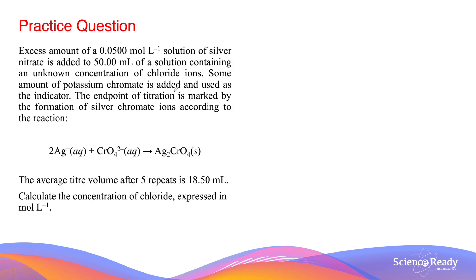Let's reinforce the concepts in Mohr's method by looking at a calculation example. An excess amount of 0.05 mol per litre solution of silver nitrate is added to 50 millilitres of a solution containing chloride ions. Some amount of potassium chromate is added and used as indicator, and the endpoint of titration is marked by the formation of silver chromate. The average titer volume after 5 repeats is 18.5 millilitres.